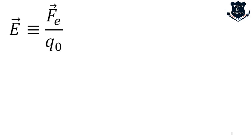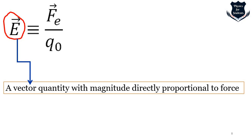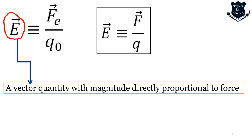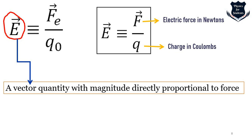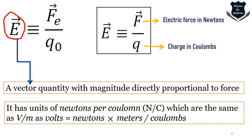The electric field is a vector quantity with magnitude proportional to force. It is expressed as electrical force in newtons divided by charge in coulombs, giving units of newtons per coulomb, which are the same as volts per meter, since volts equal newton-meters per coulomb.